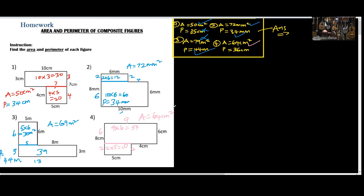Let me check again: 26 plus 8 should be 34. We have 9 at the top, plus 6 is 15, plus 4 is 19, plus 2 is 21, plus 5 is 26, plus this 8 — that is 34, not 36.